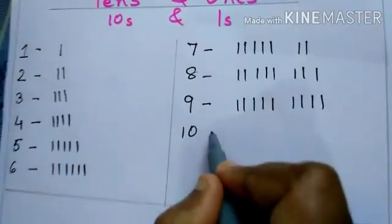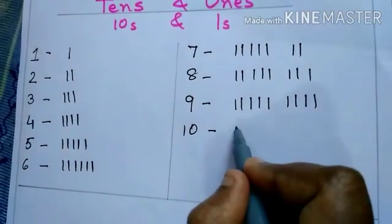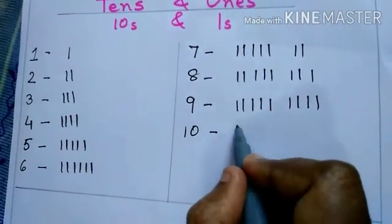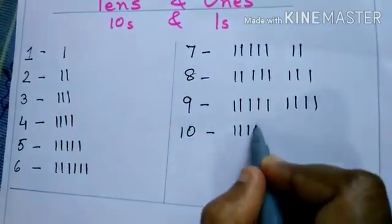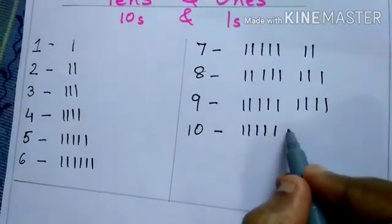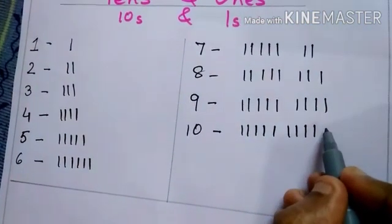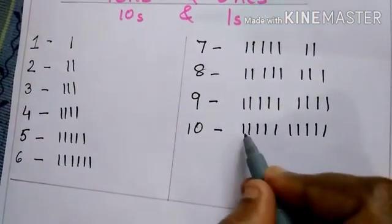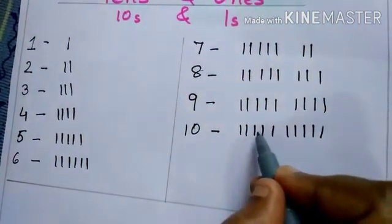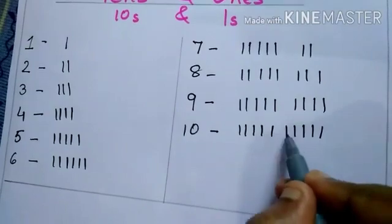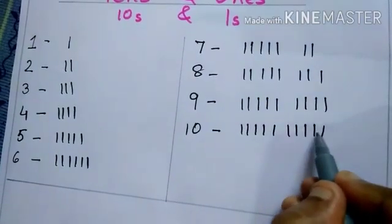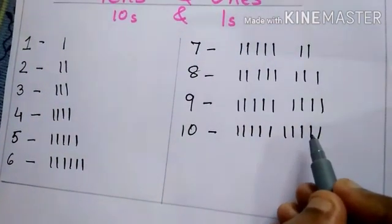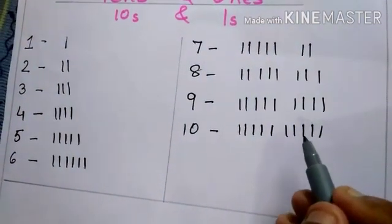And for 10 — 1, 2, 3, 4, 5, 6, 7, 8, 9, 10 — that means 10 sticks.